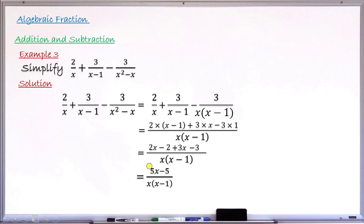The numerator 5x−5 is factorisable: factoring out 5 gives 5(x−1). So we have 5(x−1) over x(x−1), and (x−1) cancels (x−1), leaving 5/x as the final simplified result. Always check your final fraction to see if you can simplify it further.